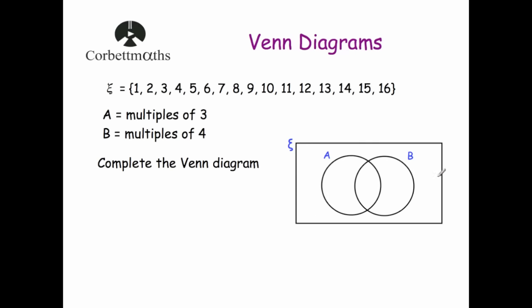So this is the Venn diagram. You've got a circle that represents A and a circle that represents B. They overlap in case there's anything that satisfies both A and B. And then you've got a rectangle around the outside — that's very important, don't forget that — because if anything is not in A or B, it goes in that rectangle.